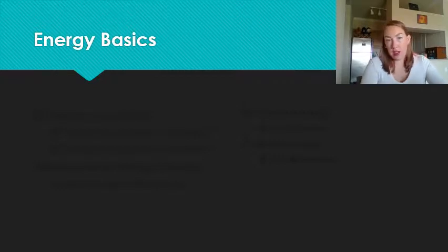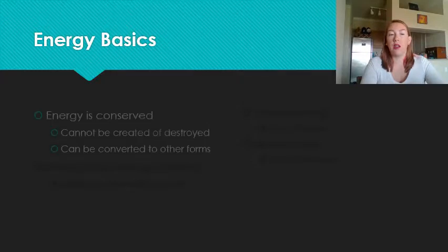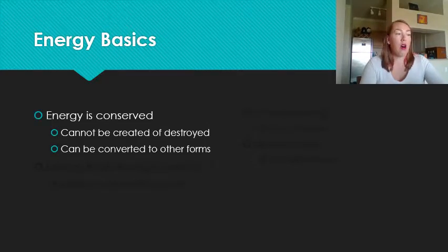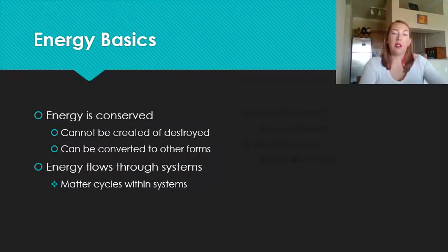We need to know a little bit about energy before we talk about photosynthesis. As we defined in chapter 4, energy is the ability to do work. Energy is conserved, meaning it can't be created and can't be destroyed. In biological systems, energy remains conserved, but energy can be converted to other forms.